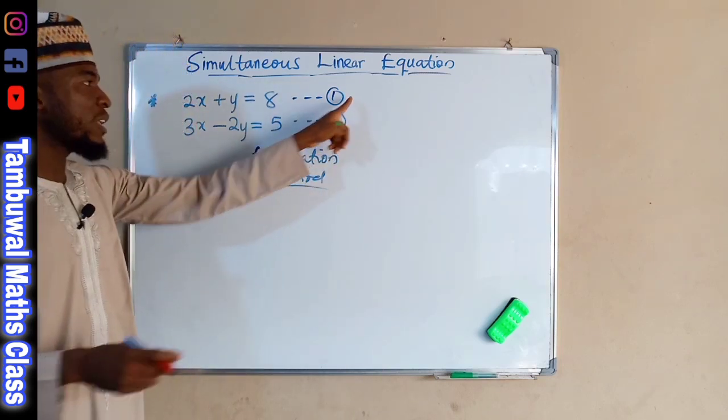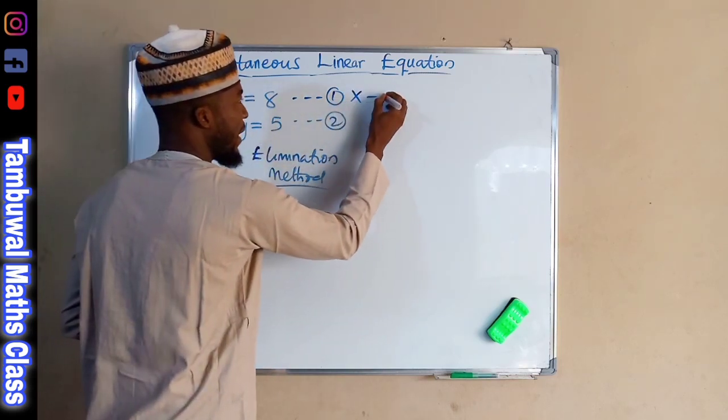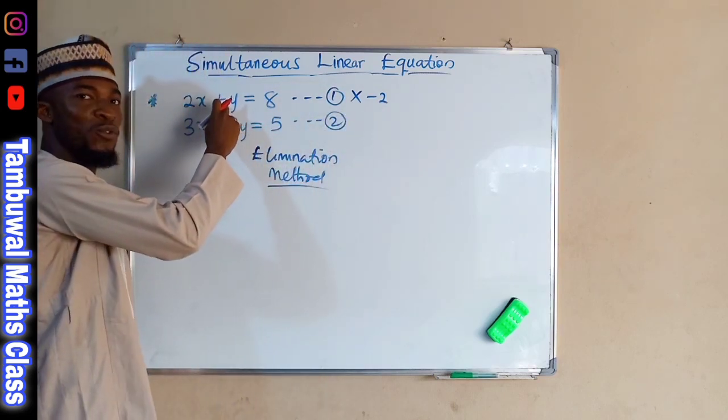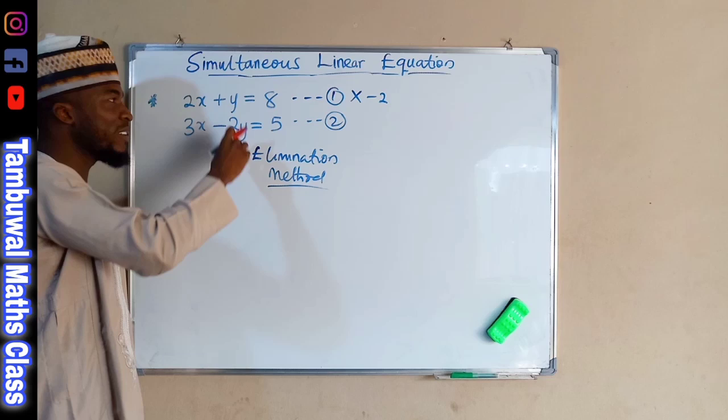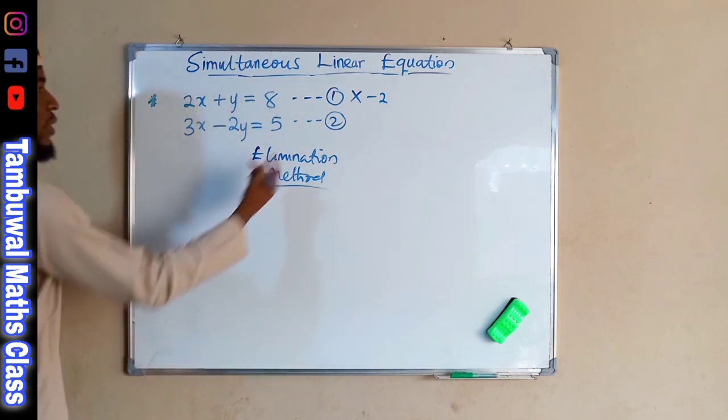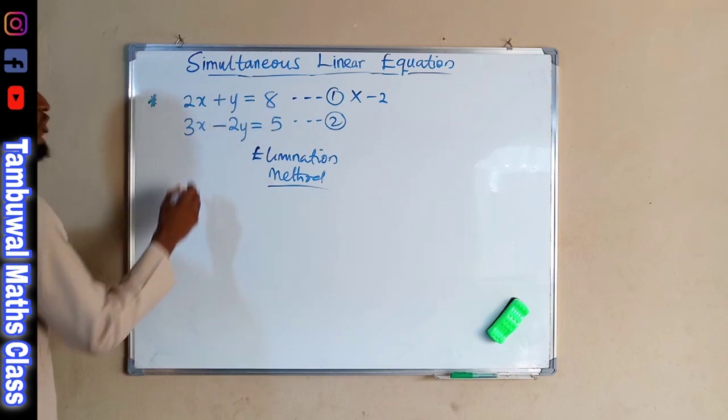By multiplying equation 1 by negative 2, it will transform this Y into a negative 2Y. Hence, we have the same coefficient of Y in both equations.